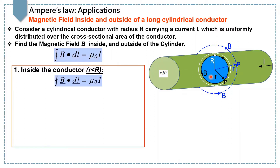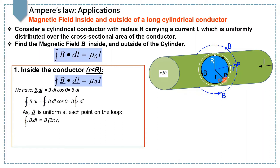First, to find the magnetic field inside the conductor, we draw an Amperian loop of radius r, where r is less than capital R, the radius of the conductor. The magnetic field at each and every point of this Amperian loop is in circular form and also in the same direction as each small element dl, so there is a 0 degree angle between the magnetic field and dl. Hence we can write B dot dl as B dl cos(0°).